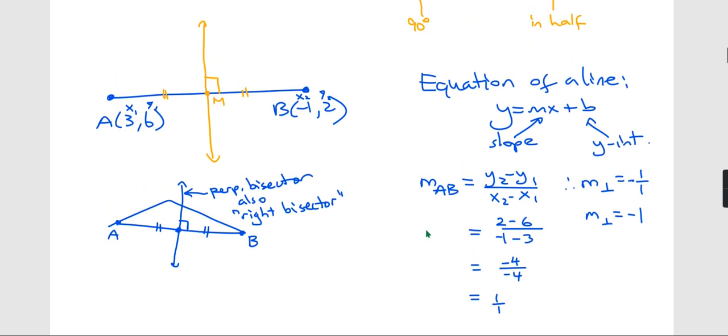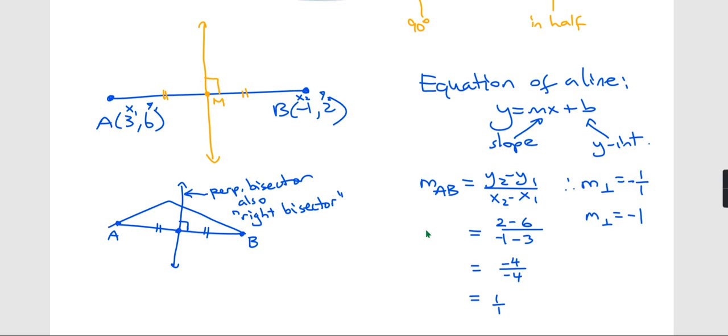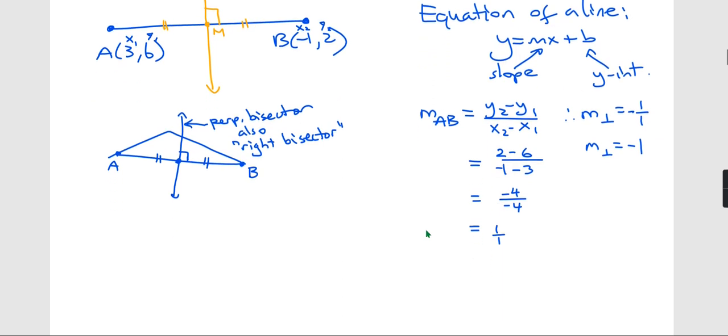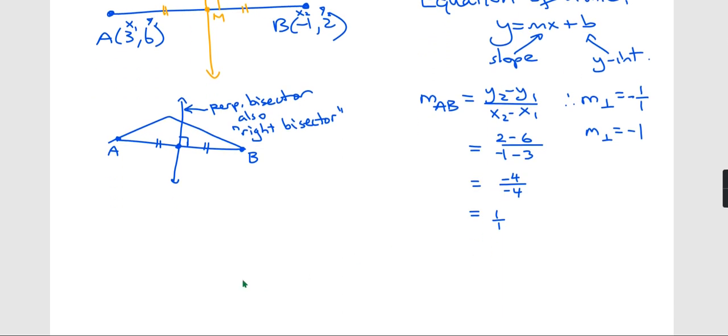What point sits on the perpendicular bisector? The only point we know is that midpoint. So we're going to need to find it. I need to find the midpoint. We have a midpoint formula. Once again, I'm going to use a formula.